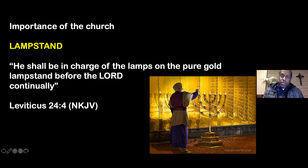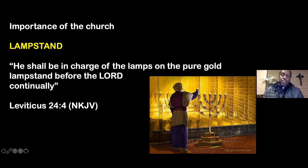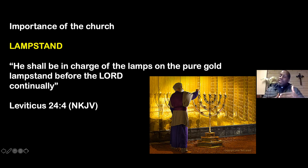The lampstand was always lit in the tabernacle so the priest could do his work — he couldn't do his work in darkness. Revelation is about the last days, the past, the current day, and all of the work that Jesus has done, is doing, and will do. He does this work through the church. As we study Revelation, we need to think: this is not just about me, it's about us. This is about people of faith coming together — this is the context through which Revelation was written.